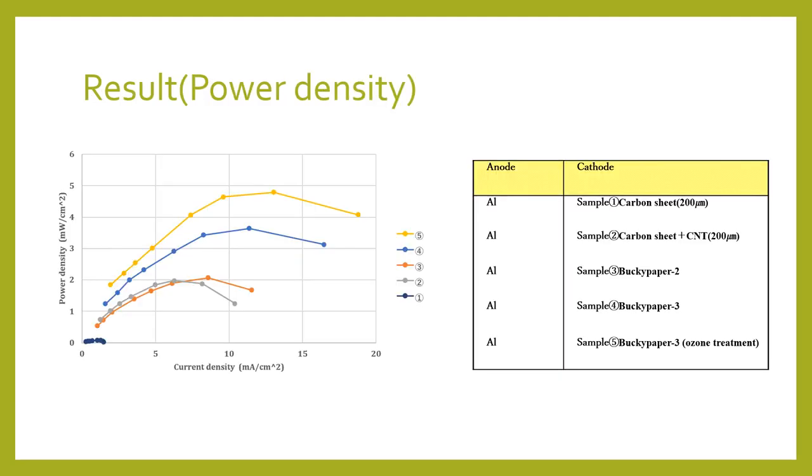This is the comparison of the power density. The numbers in the graph correspond to the numbers in the cathode of the table. The thing which used buckypaper with three layers and applied ozone treatment was the highest.